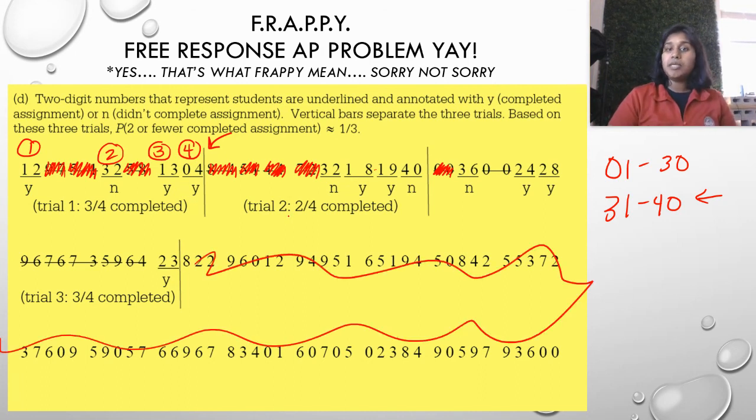So how many completed it in trial one? Three out of four. Trial two, two out of four. Trial three, three out of four. Based on these trials, the probability of getting two or fewer completed assignments is one out of three. Ta-da!